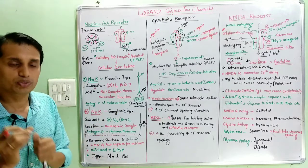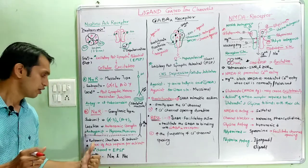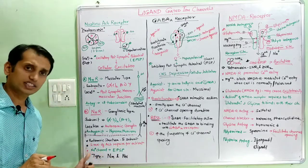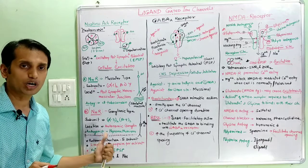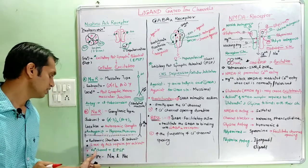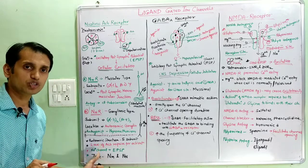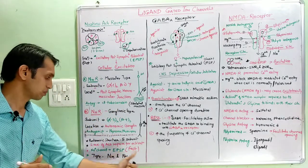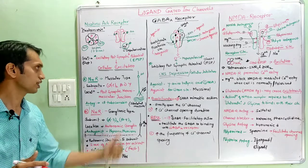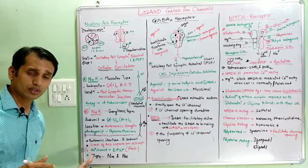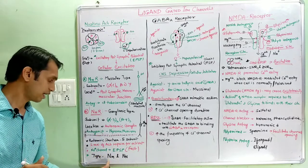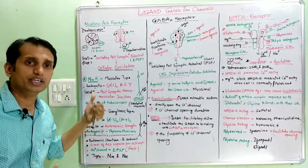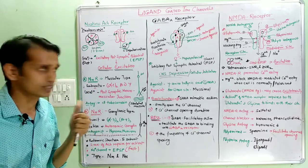The major basic features of nicotinic receptors are: first, they have a pentameric structure with five subunits — alpha, beta, gamma, and delta; second, two molecules of acetylcholine are required for activation; third, they are sodium ion channels producing fast EPSP; and fourth, they have two subtypes — NM and NN. These are the basic features of nicotinic acetylcholine receptors, a type of ligand-gated sodium ion channel.